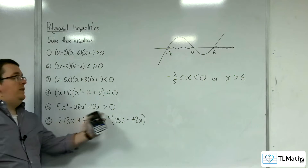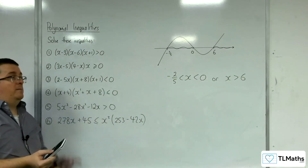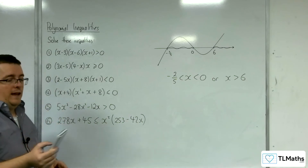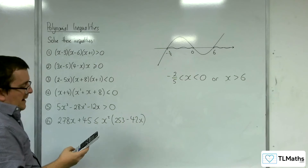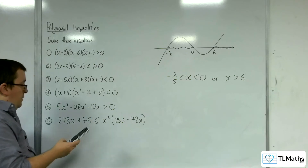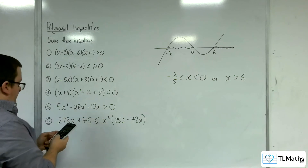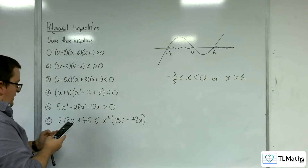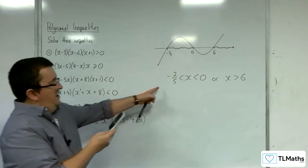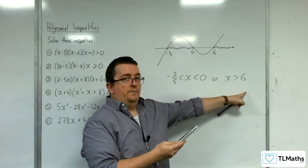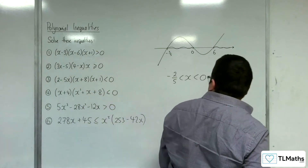Of course, within that form I could have used my cubic inequality solver on the calculator. Go to menu, then B. Polynomial degree is 3 and we want it greater than 0, so that's option 1. Enter 5, minus 28, minus 12, and then 0, and we get precisely what I've written. That's number 5.